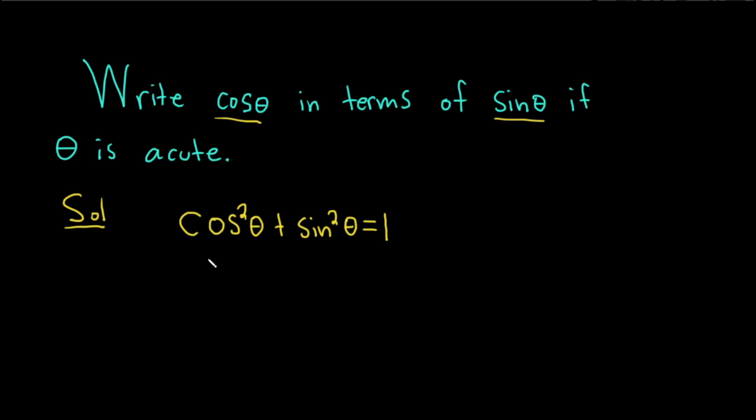So this is the identity that most people know. And we have to write cosine in terms of sine, which means we have to solve this for cosine.